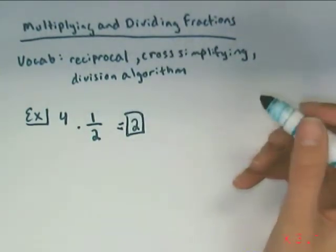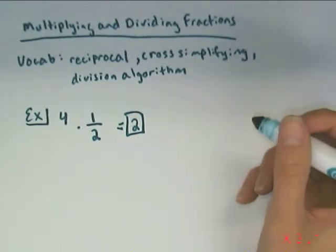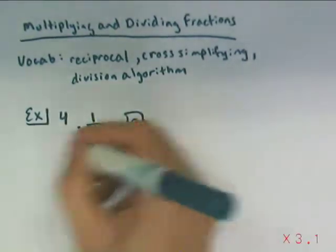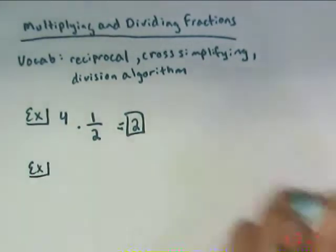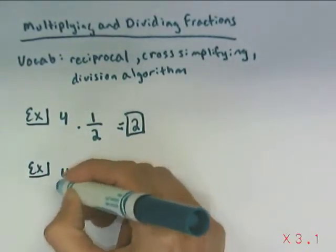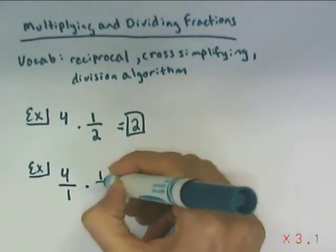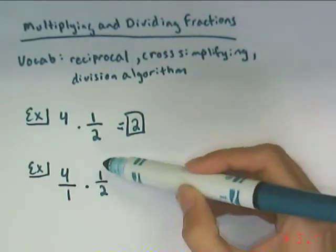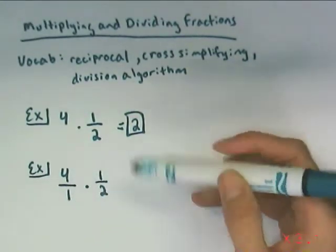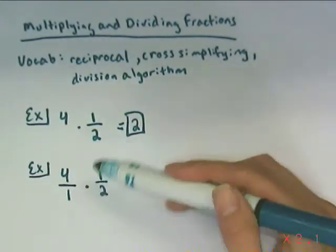So now when we're working with fractions, make everything look like a fraction. So if we were to do this again, 4 is now 4 over 1 times 1 half. We want numerators and we want denominators. Any whole number you can make look like a fraction by putting it over 1.